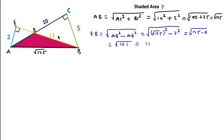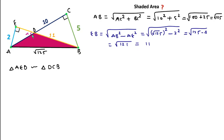Now we can see that triangle AED and triangle DCB are both similar triangles. Triangle AED is a right angle triangle with angle E = 90°, and angle C is also 90°. If we consider one angle as alpha, then the opposite angle will also be alpha by the vertically opposite angle property.